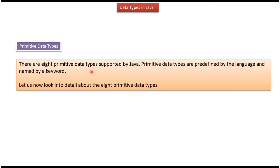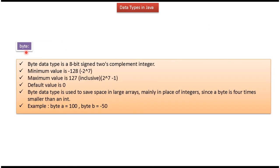There are eight primitive data types supported by Java. We will see one by one. First data type is byte, which is an 8-bit signed two's complement integer. Minimum value is minus 128 and maximum value is 127, and default value is 0. Byte data type is used to save space in large arrays, mainly in place of integers, since byte is four times smaller than an int. Here you can see how to declare byte.